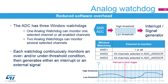Each ADC has three integrated 12-bit analog watchdogs with high and low threshold settings. The ADC conversion value is compared to this window threshold. If the result exceeds the threshold, an interrupt or timer trigger signal can be asserted without CPU intervention.